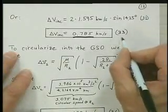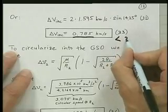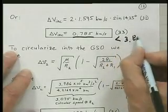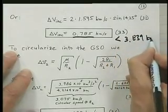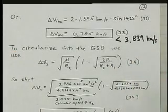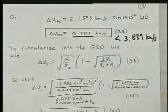That is much smaller than the 3.839 kilometers per second we had before when we looked at what would happen if we had to change the inclination to 0 from the circuit where we started. So there is quite a big savings there.